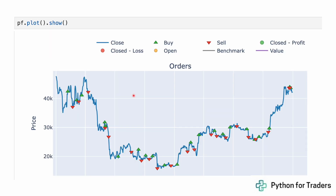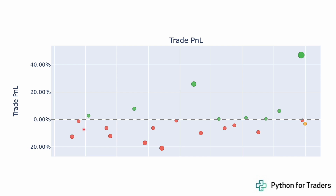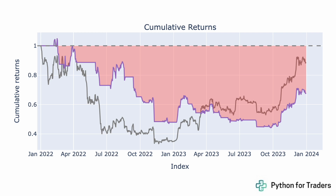You can still look at some nice charts. Using pf.plot.show, we can see the order history over the duration of the backtest. Over the two-year period, Bitcoin went from almost $50,000 down to below $20,000 and back up to $40,000–$45,000 — a lot of volatility. You can trace visually which trades were winners and losers. We can also see the trade P&L as a distribution, with more profitable trades shown as larger circles. Our best trade was over 40%, but the majority were losers. The last chart is the equity curve, showing cumulative strategy returns in purple versus Bitcoin as the gray benchmark line.